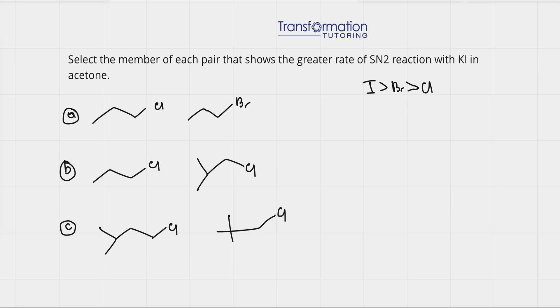Select a member of each pair that shows the greater rate of SN2 reaction with KI in acetone. So what makes SN2 reaction go faster? What does SN2 reaction like?